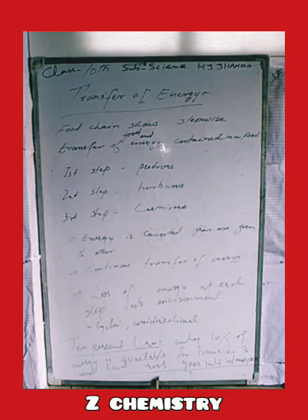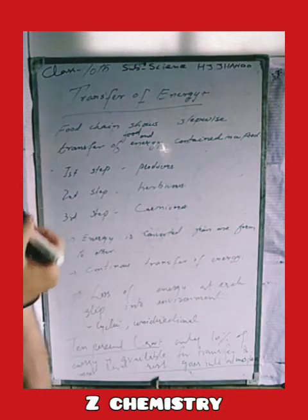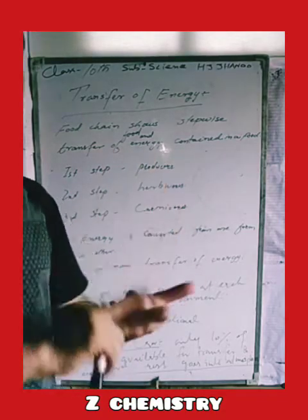The sunlight provides energy to producers. If the sunlight provides 100 joules of energy, then the producer only captures 10 joules to produce food. This is the first step.